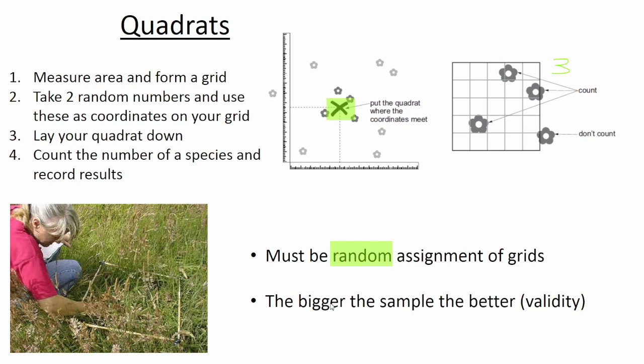One of the other requirements for the best quadrat investigation is that the bigger the sample the better, and this is because it improves the validity of the results. Obviously we are sampling an area, we don't have time to count the whole area, but the more samples you take the more valid your results are going to be, the better they're going to reflect reality.